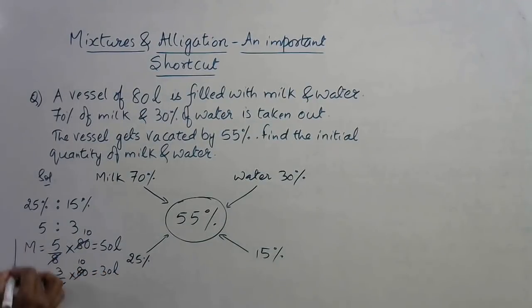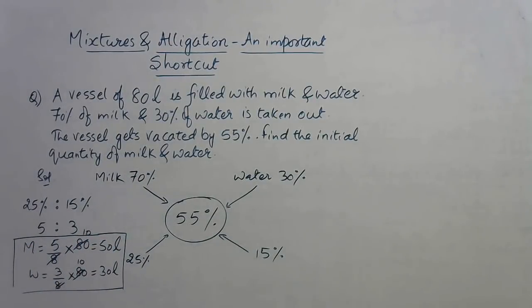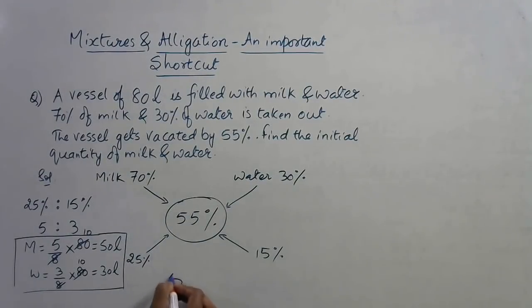Final answer: the initial quantity of milk is 50 liters and initial quantity of water is 30 liters. So 50 liters and 30 liters is the correct option.